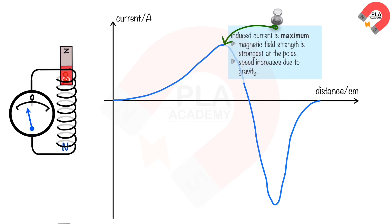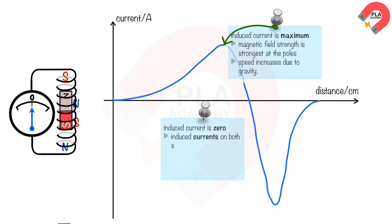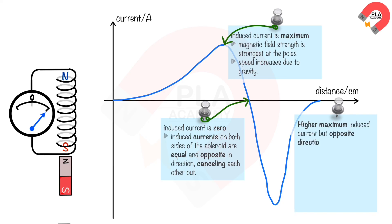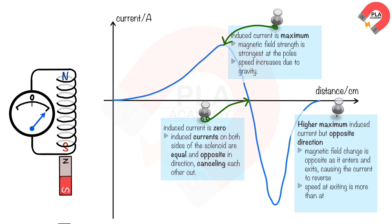The induced current is zero when the magnet is at the middle of the solenoid, because the currents induced on both sides are equal and opposite in direction, cancelling each other out. The induced current then reverses and increases to another maximum when the magnet exits the solenoid, because the magnetic field change is opposite as it enters and exits. The peak induced current at exit can be higher than at entry, because the speed of the magnet at exiting is greater than at entering due to gravity.